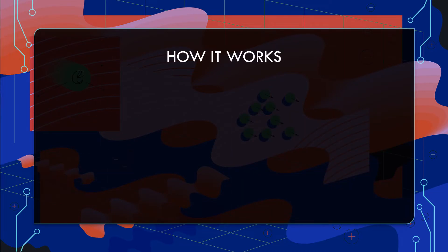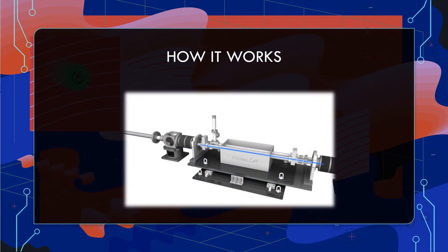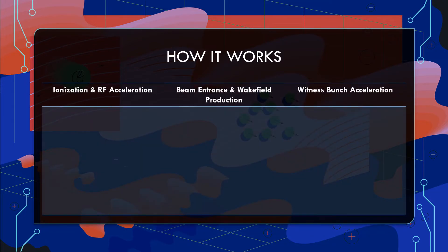Now let's discuss how plasma wakefield acceleration works. The experimental setup consists of the plasma cell, which is a chamber filled with a metallic vapor such as lithium or rubidium. It also includes an ionization laser used to turn this metallic vapor into a plasma, as well as an RF accelerator to get the electron beams up to their initial energy before entering the plasma cell. The process can be broken down into three steps: ionization and RF acceleration, beam entrance and wakefield production, and witness bunch acceleration.